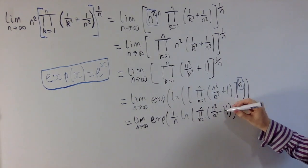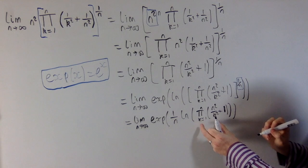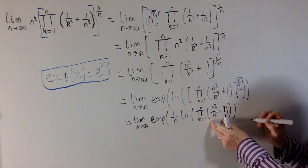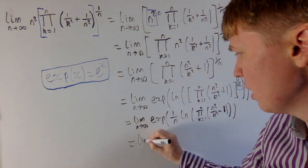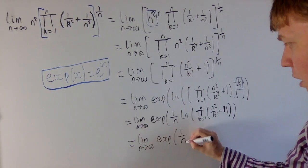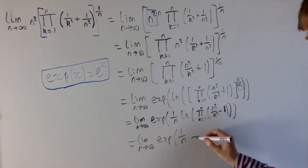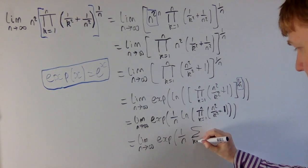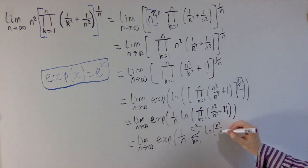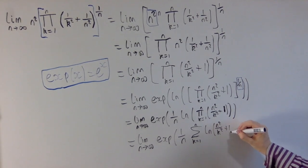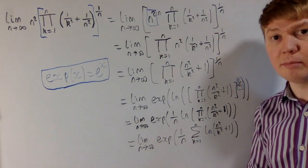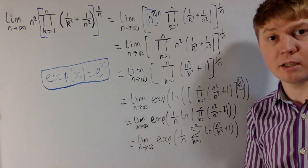So all we end up with is e to the power of 1 over n, then it's ln of the product from k equals 1 to n of n squared over k squared plus 1. Next, since we've got log of a product, we can write this as the sum of all the logs of each individual piece. This gives us e to the power of 1 over n, but now instead of log of all these products, it's the sum from k equals 1 to n of ln of n squared over k squared plus 1. We've got a sum multiplied by 1 over n — a structure we can use to our advantage.